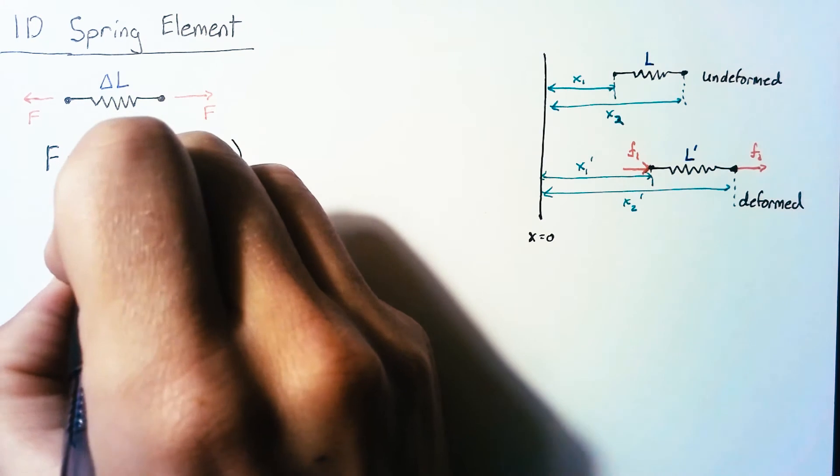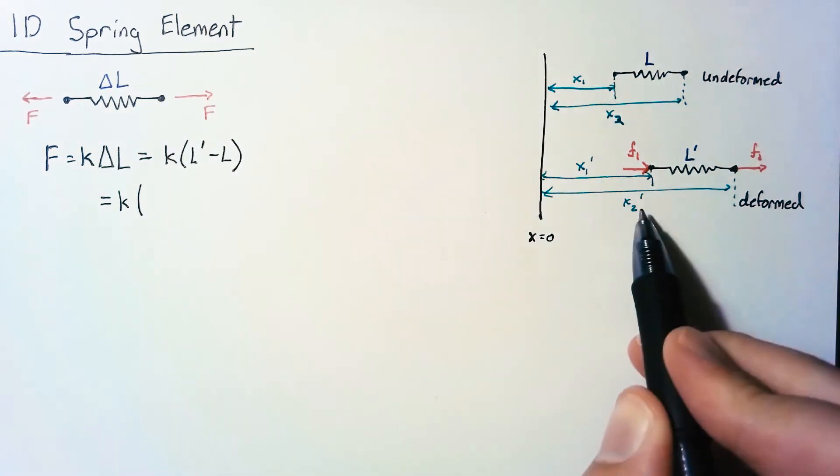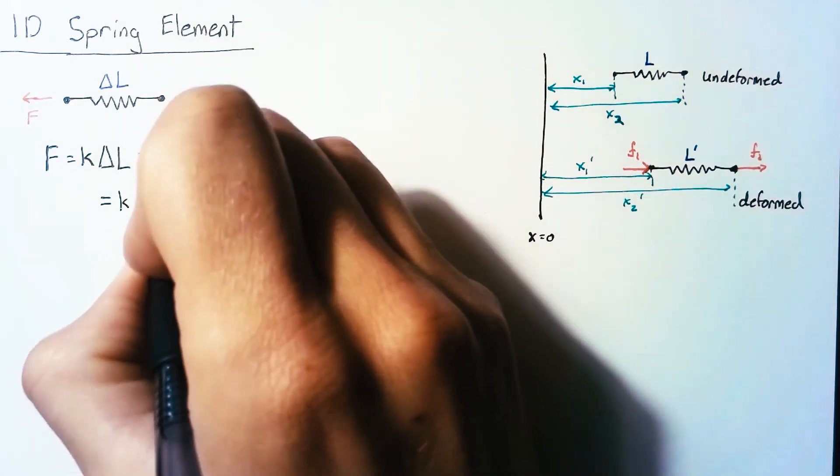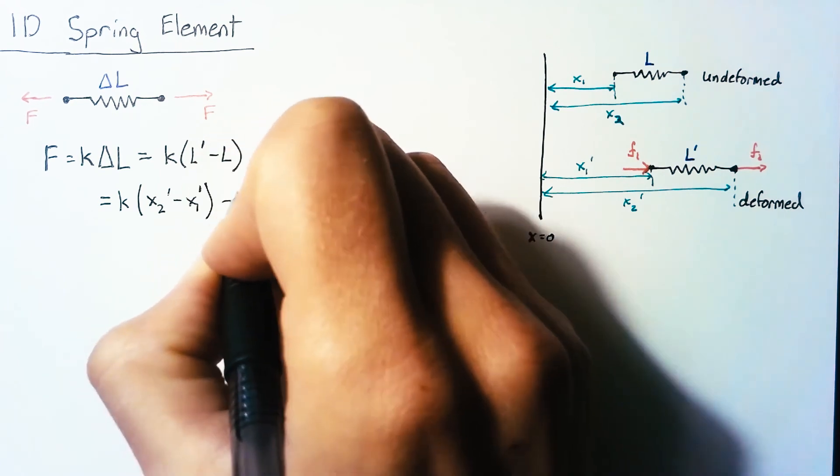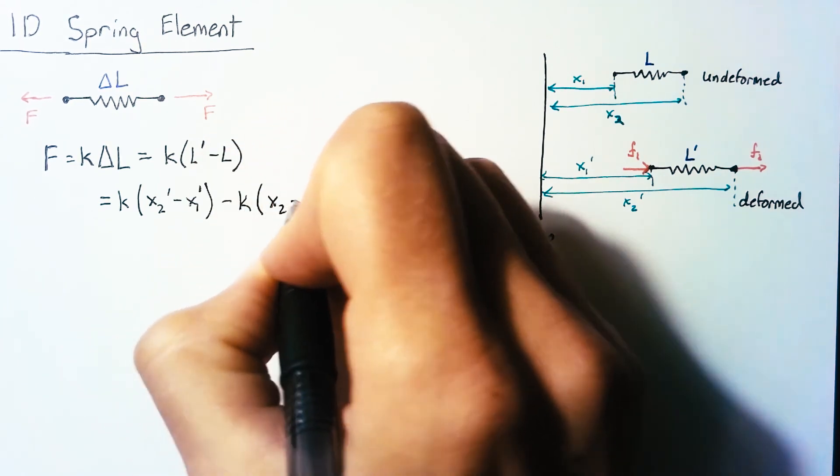Now we can expand this out further. l prime becomes x2 prime minus x1 prime and l becomes x2 minus x1.